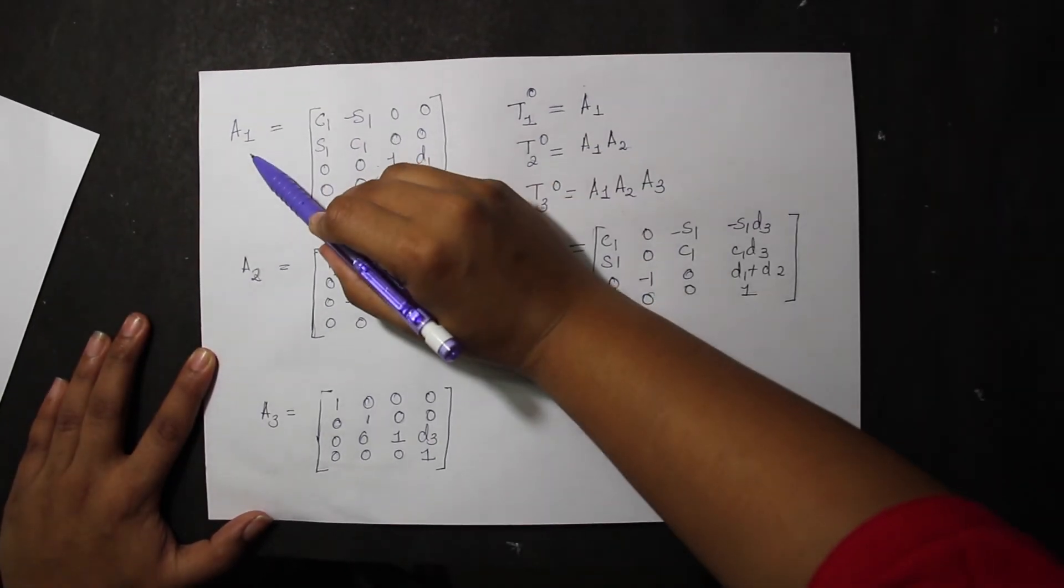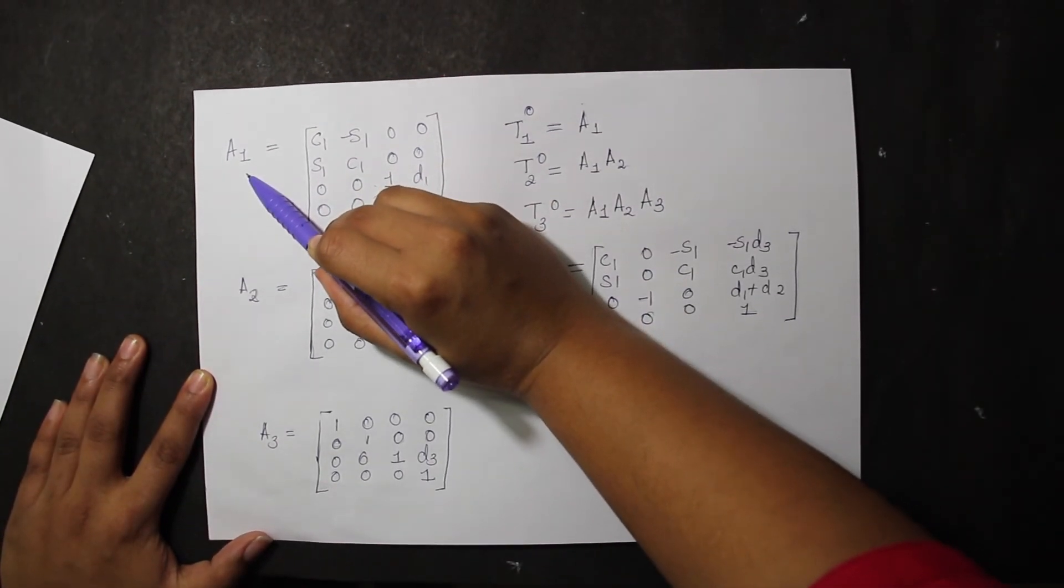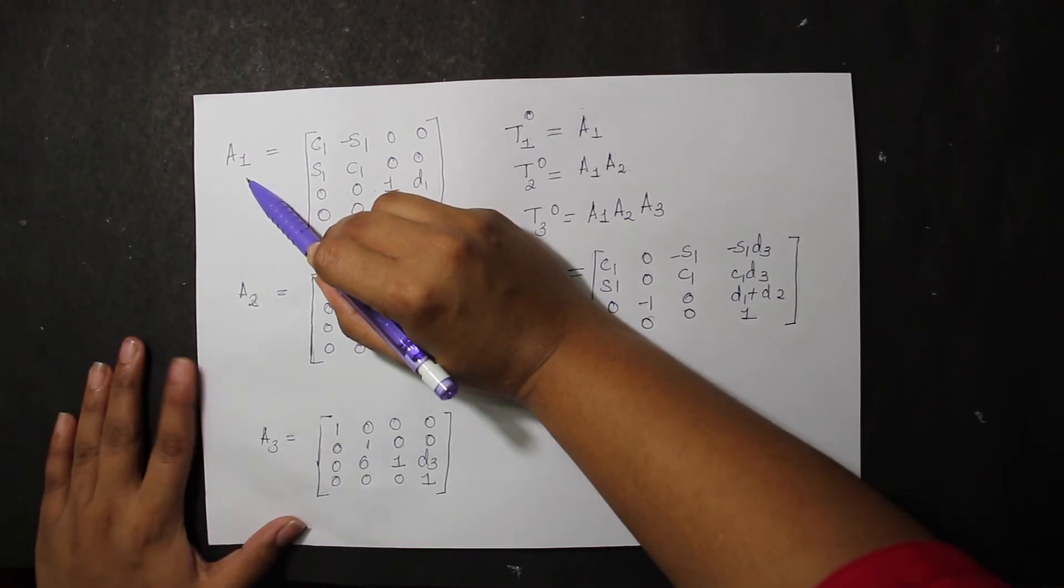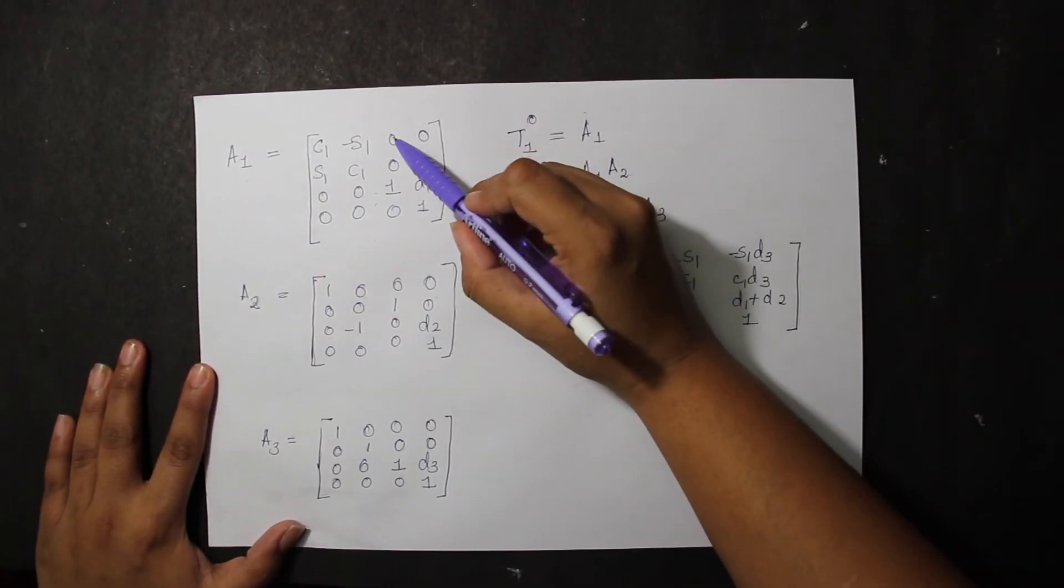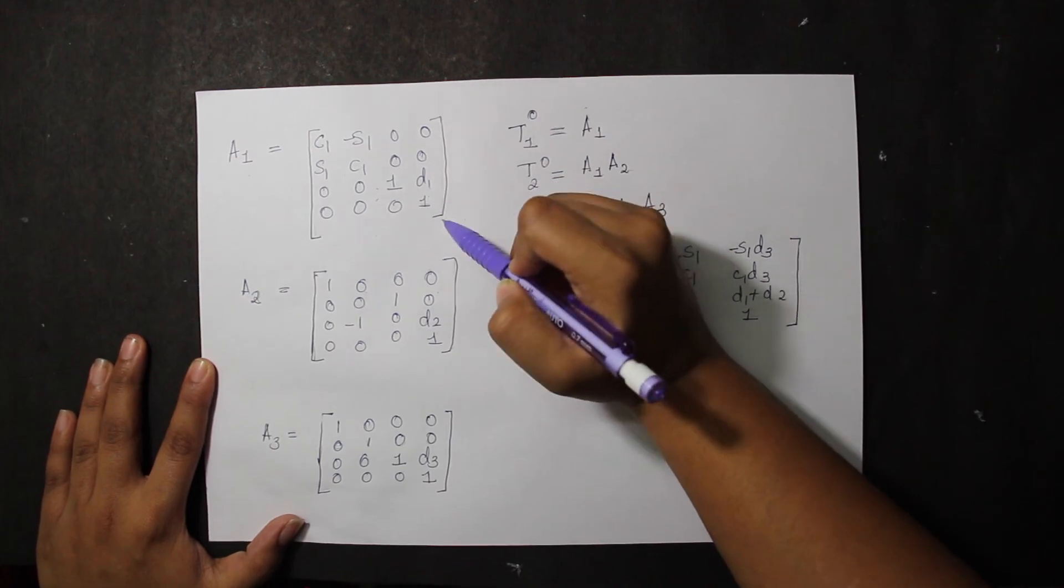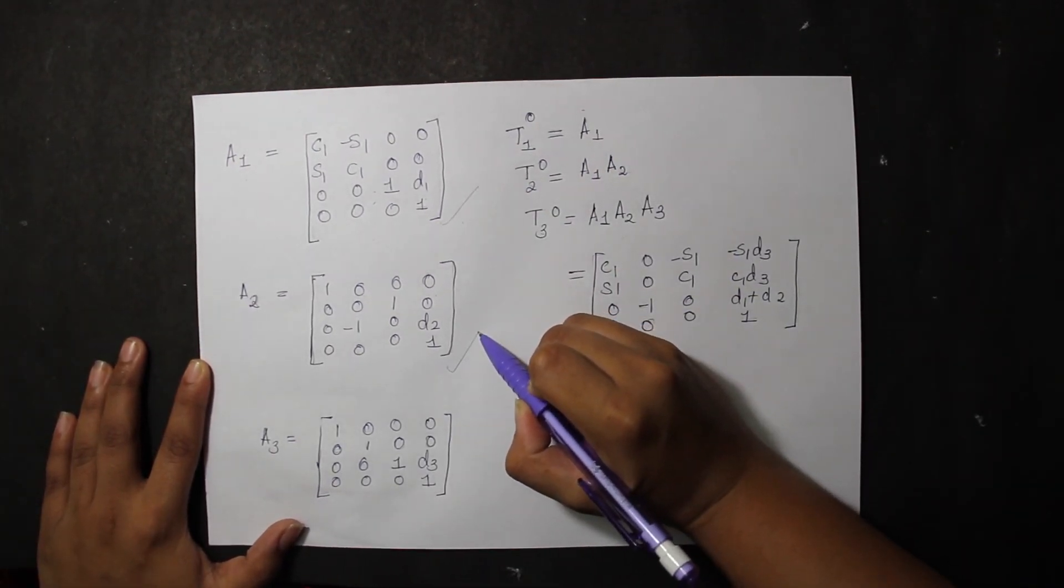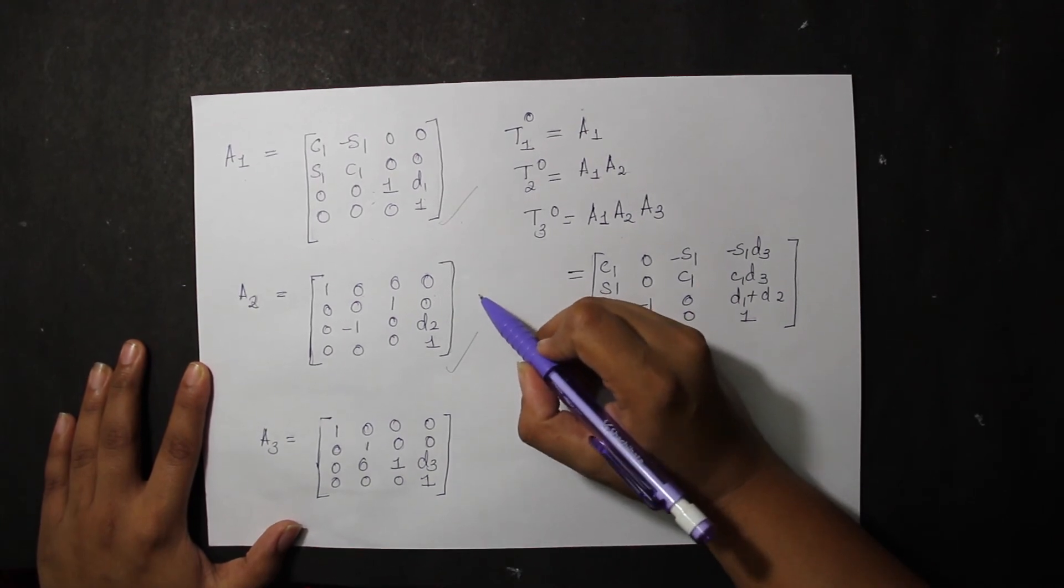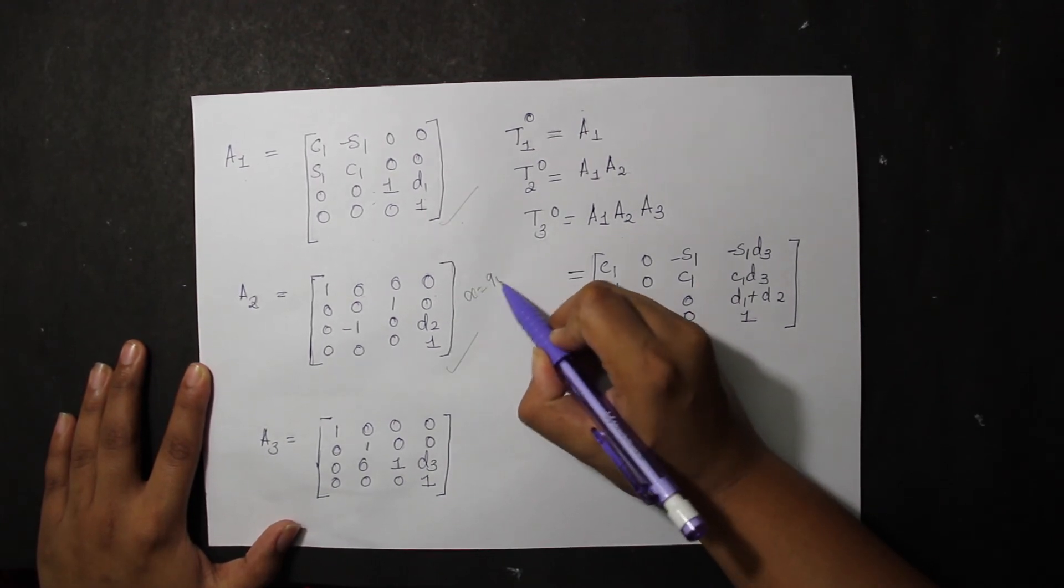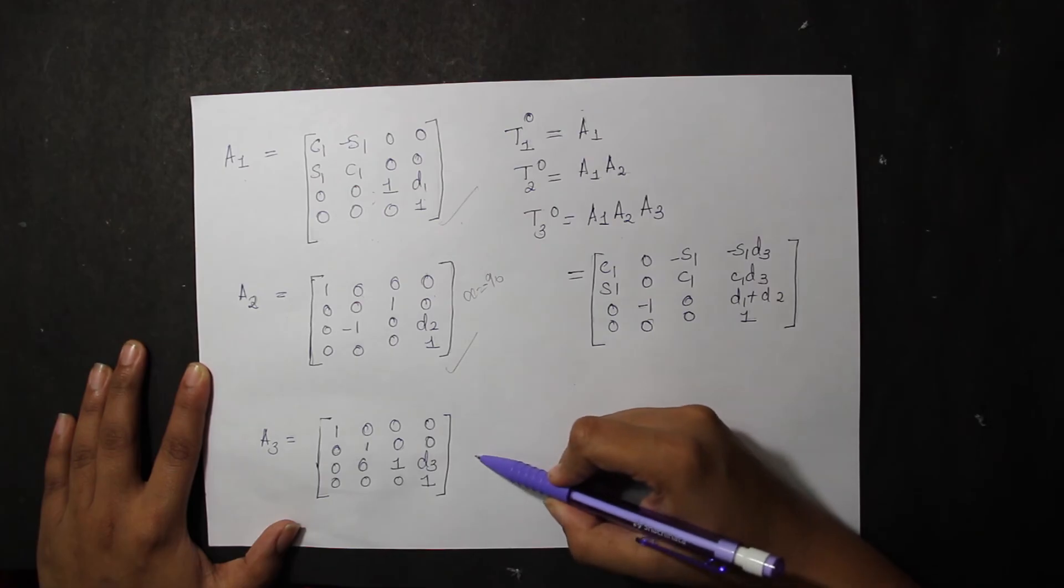Now let's look at it. A1 - we find out that since we don't have a value of alpha here, the rotation matrix is really simple. Similarly, for A2 we only have to substitute the value of alpha, that is minus 90 degrees. D2 is star marked, and similarly for A3 we have D3 as star marked.